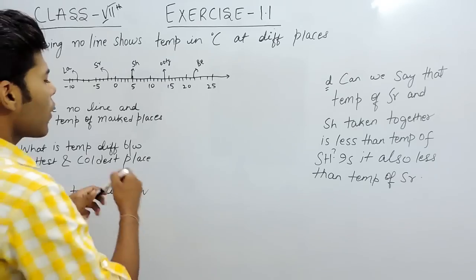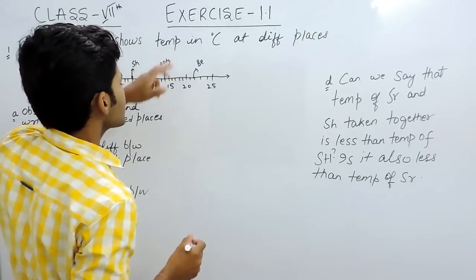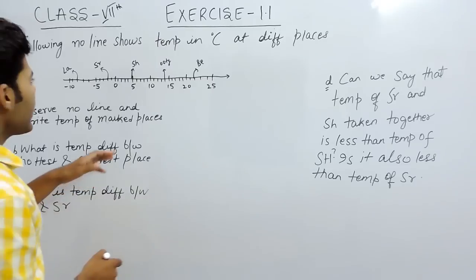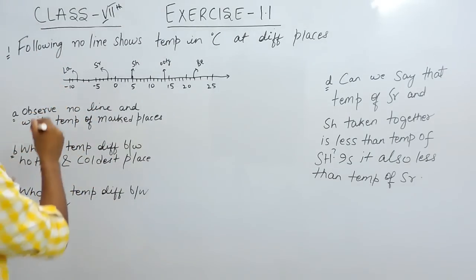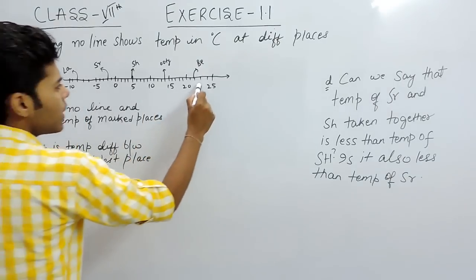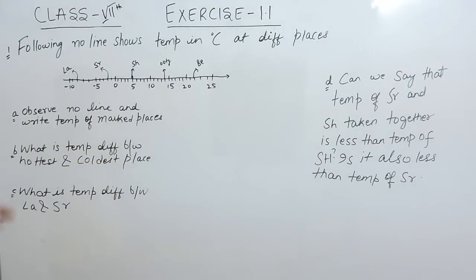Now, on the most extreme right will have the highest temperature because temperature is mentioned on this number line, and the extreme left of this number line will have the lowest temperature. Minus 10 is the lowest temperature and 25 is the highest temperature.